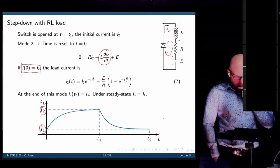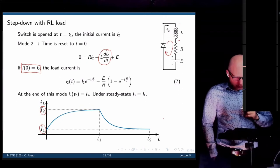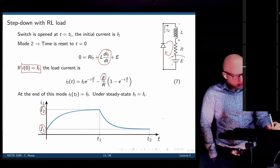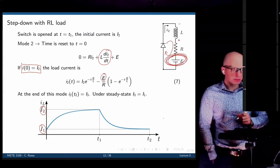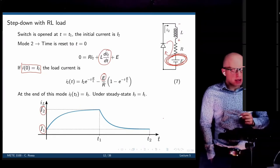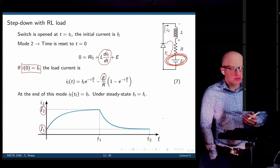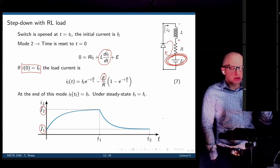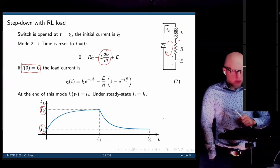E in the circuit equations represents the back EMF of a motor — or any voltage source, to keep the model generic.